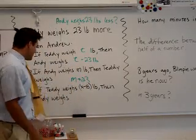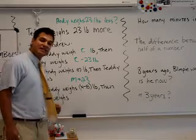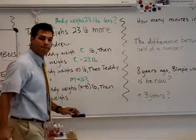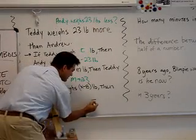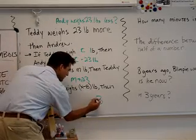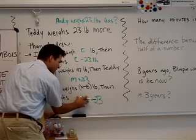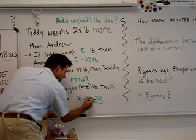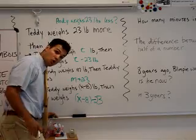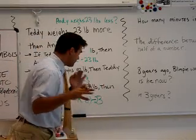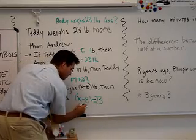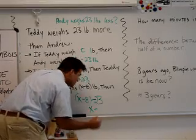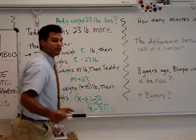Now I have another tricky one. What if Teddy weighs X minus 8 pounds? Then what does Andy weigh? Well, we know that Andy always weighs 23 pounds less, right? So Andy weighs 23 pounds less than whatever Teddy weighs. So you put whatever Teddy weighs here, you subtract 23 like it is here. Now Teddy weighs X minus 8. X minus 8 minus 23. Well, can I simplify this a little bit more? Yes. I can take away 8 and take a minus 8 minus 23. Altogether, it's X minus, let's see, 23, 31. Don't forget the units.